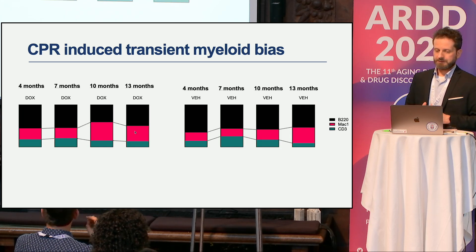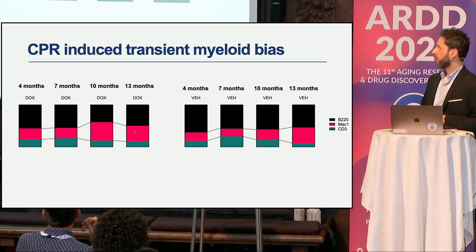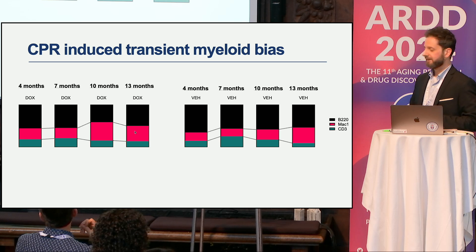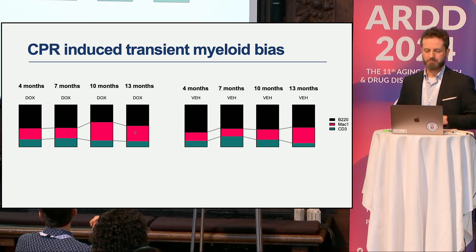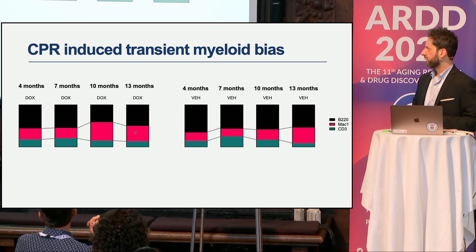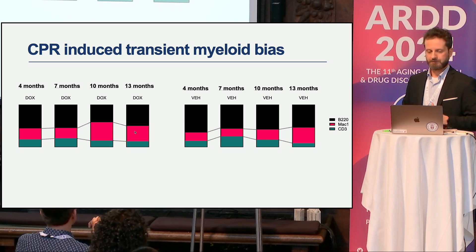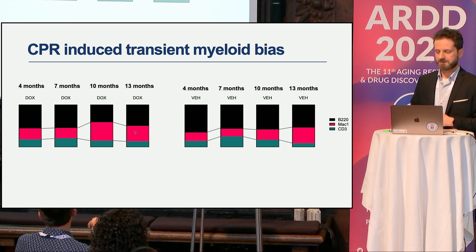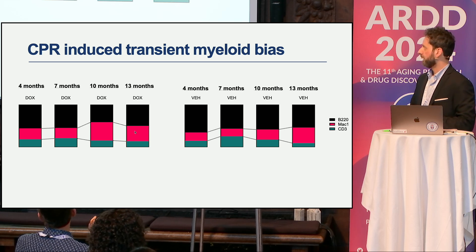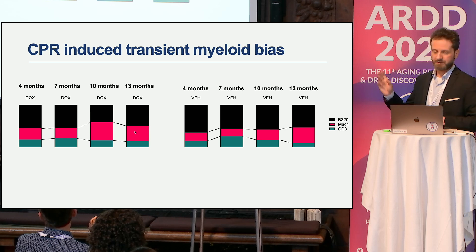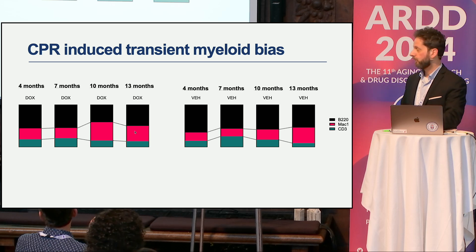Regarding blood composition, we also found that CPR induced a myeloid bias. At the 10-month time point, reprogrammed mice show increased myeloid cells relative to controls. In aging research this is generally not a good sign, since hematopoietic stem cells become biased toward myeloid lineage with age. However, I call this transient and temporary because by 13 months the myeloid bias is reversed and very similar to what vehicle controls show.